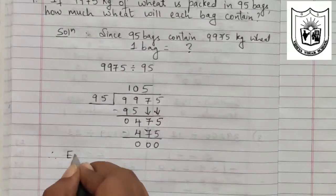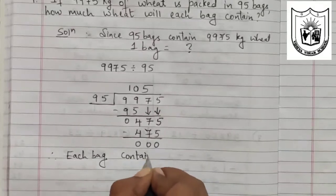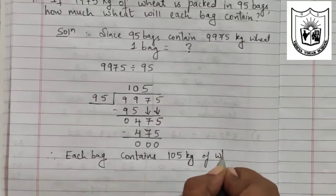Therefore, each bag contains 105 kg of wheat.